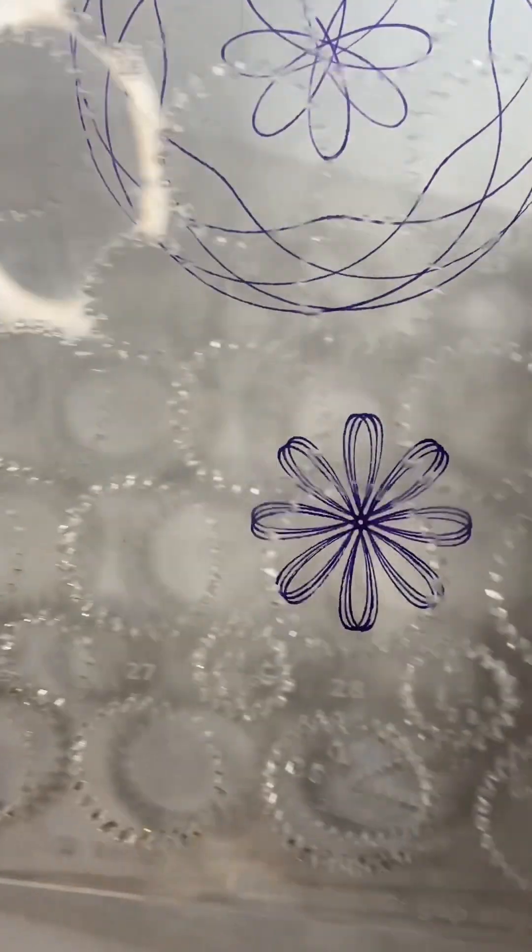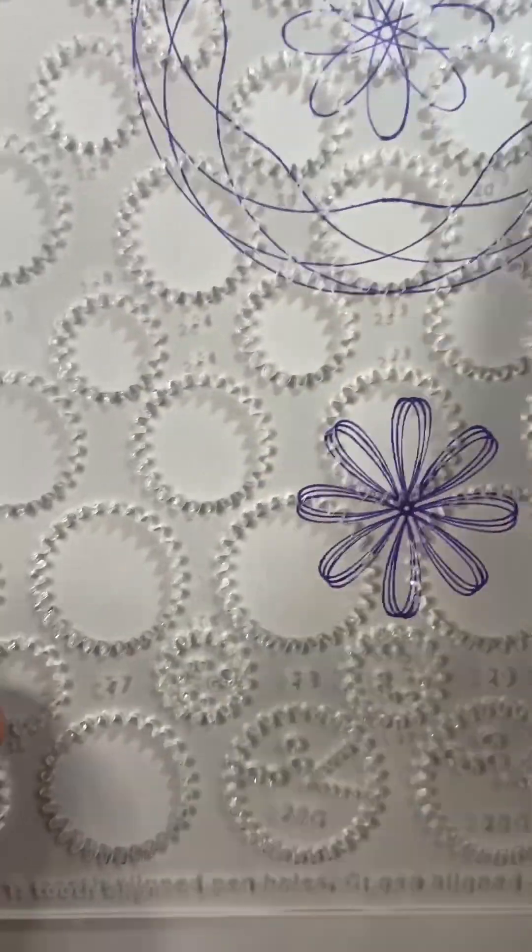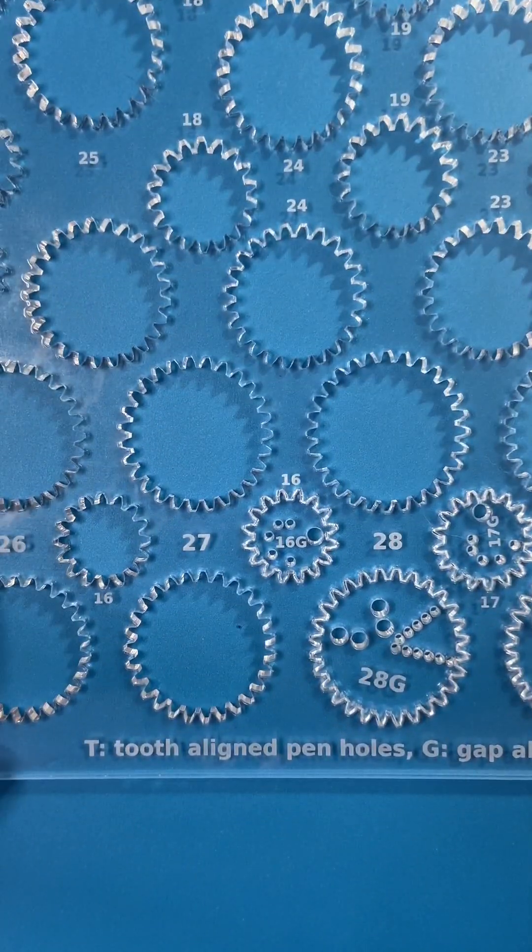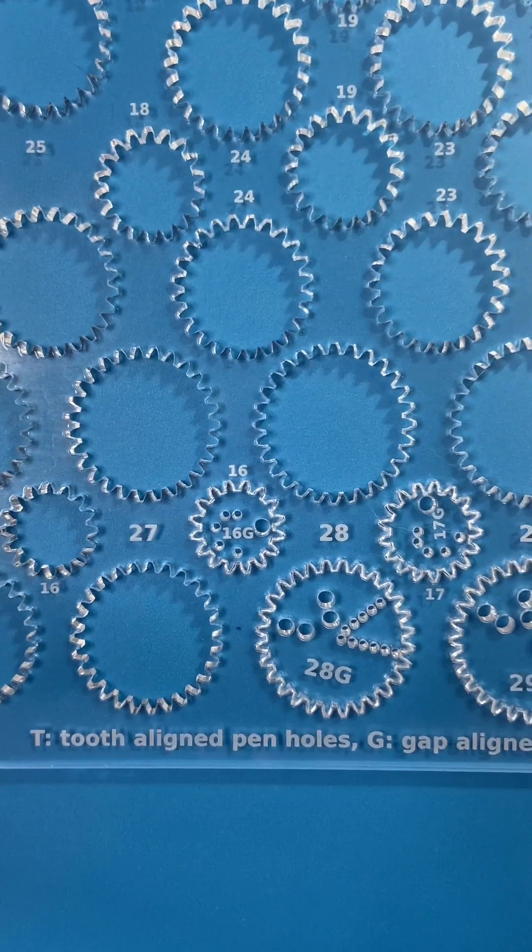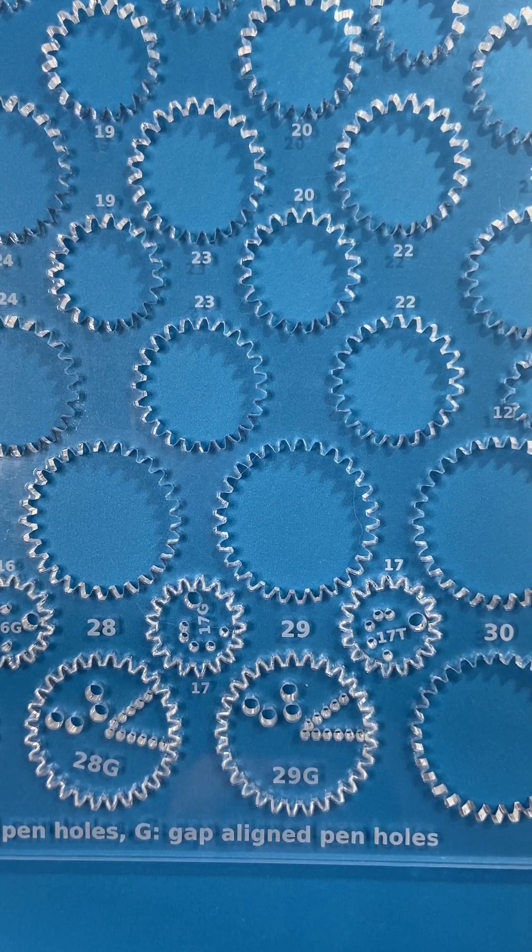And if you're having trouble remembering, the lighting on this is terrible. Take away that white paper. You can see on the bottom of the frame, T is tooth aligned pen holes and G is gap aligned pen holes. And there's just a whole bunch of gears.